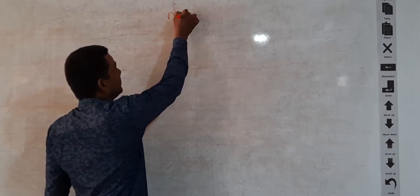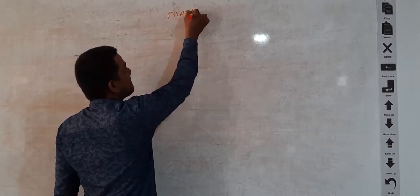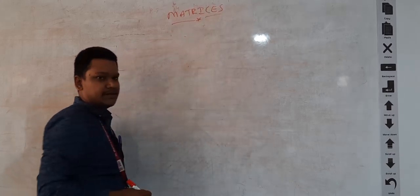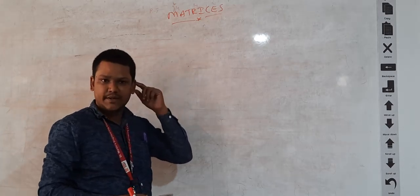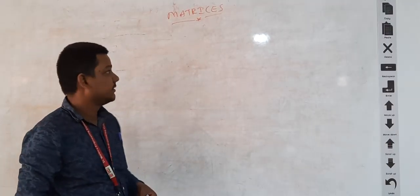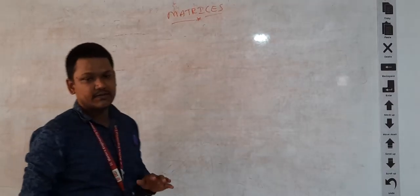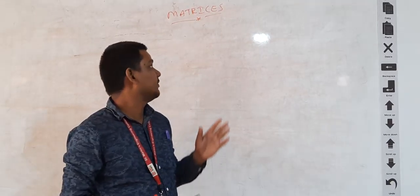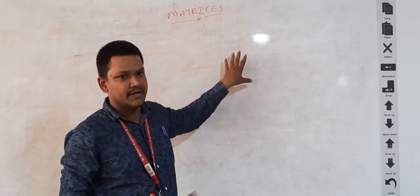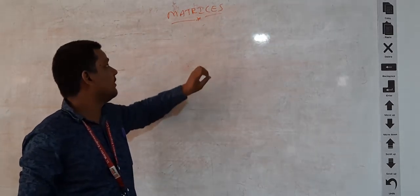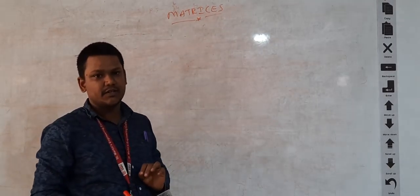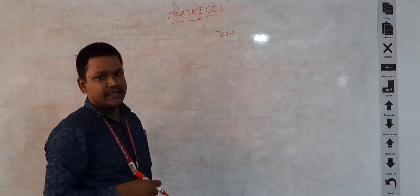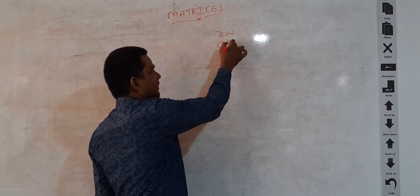Today we discuss the topic of matrices. First is the main definition of matrix and then the types of matrices. A rectangular arrangement of elements from a field F is known as matrices. The horizontal arrangement of elements is known as the row, and the vertical arrangement of elements is known as column.